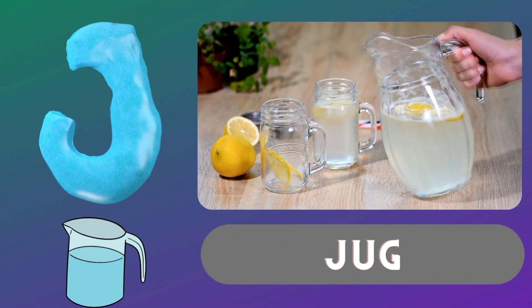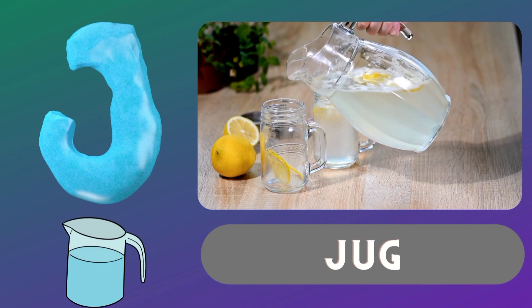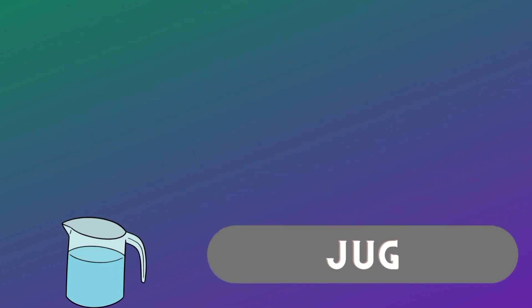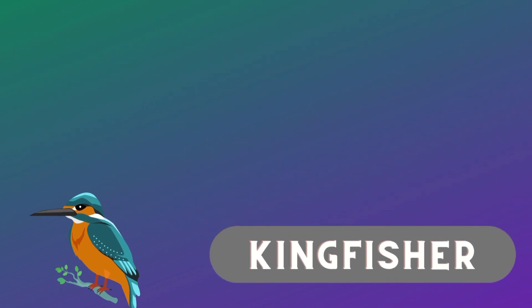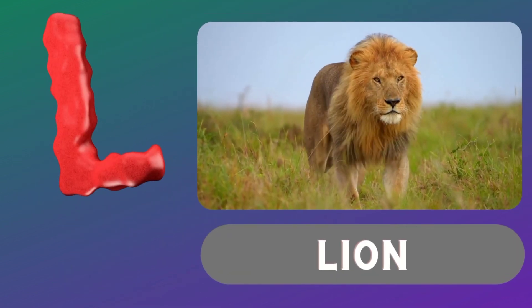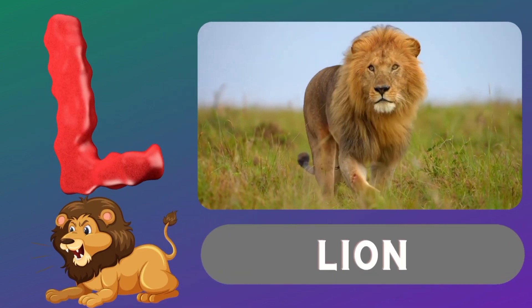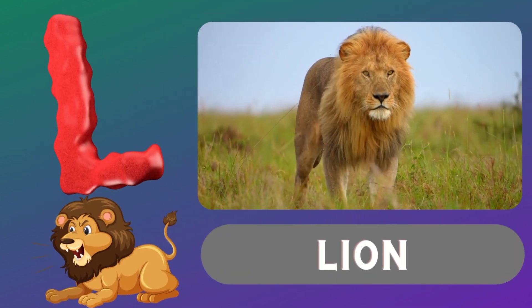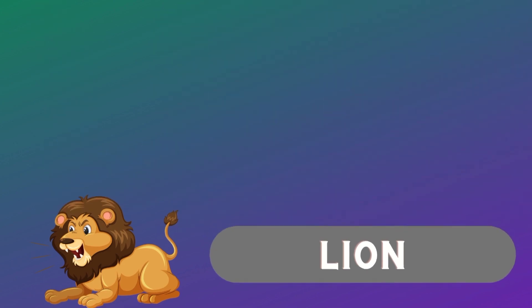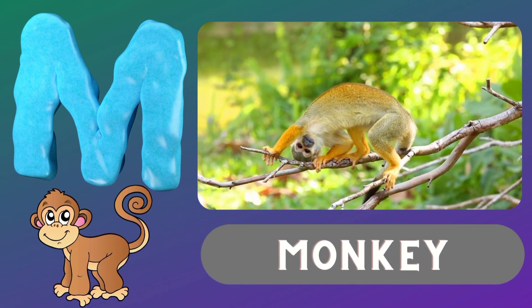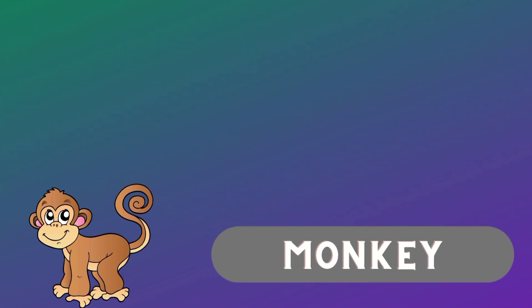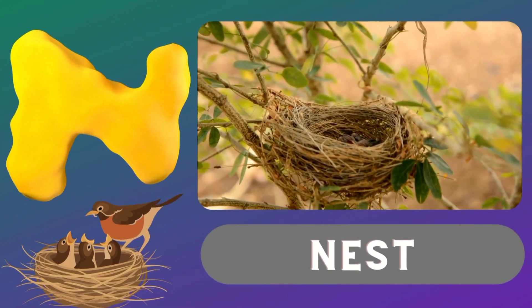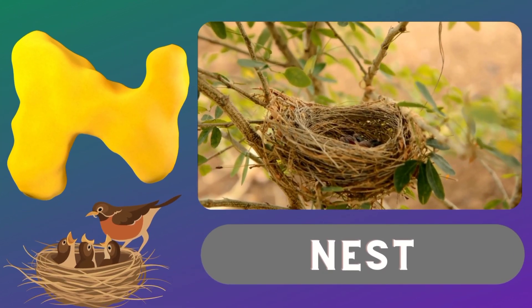J. J for Jug. K. K for Kingfisher. L. L for Lion. M. M for Monkey. N. N for Nest.